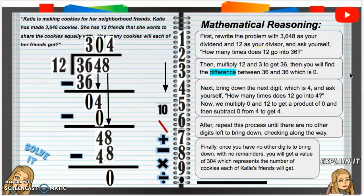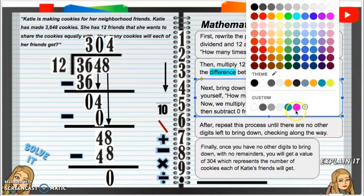Next, bring down the next digit, which is 4, and ask yourself, how many times does 12 go into 4? Now, we multiply 0 and 12 to get a product of 0, and then subtract 0 from 4 to get 4. So, I know that also the word product is going to be a vocab word.